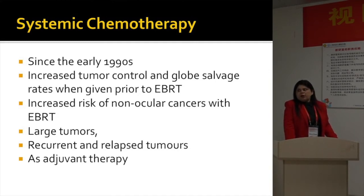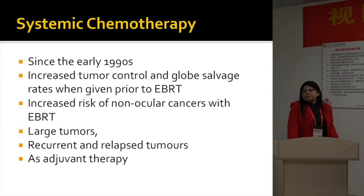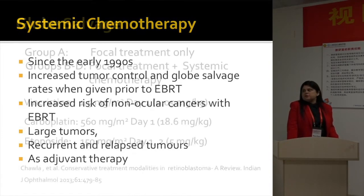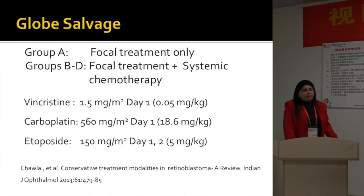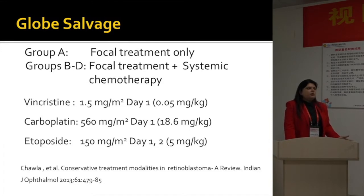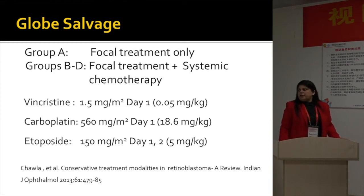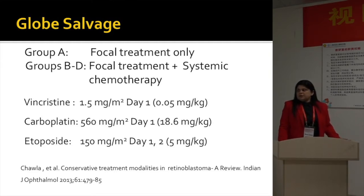Systemic chemotherapy can be used for large tumors, for recurrent and relapsed tumors, and as salvage therapy. Group A tumors we treat only with focal treatment — laser, TTT, or cryotherapy. For Group B to E tumors we use focal treatment and systemic chemotherapy, also using etoposide on two days. That is the protocol we use at our center.